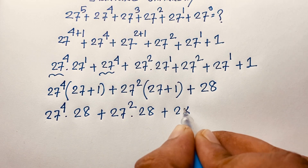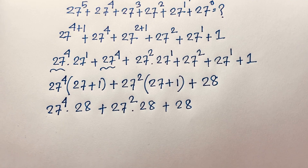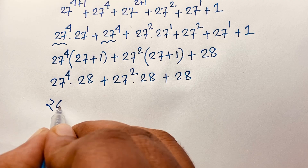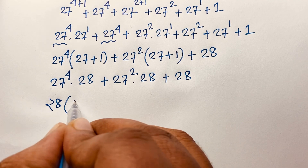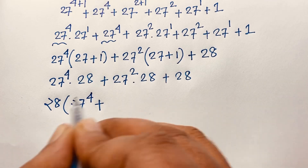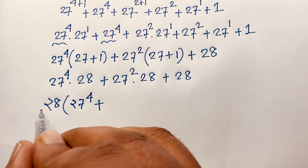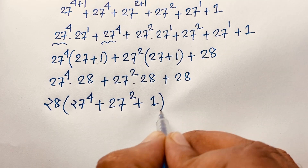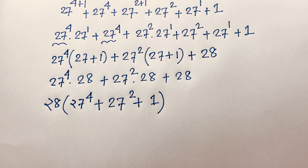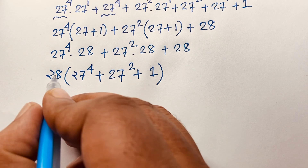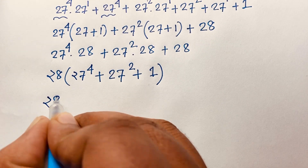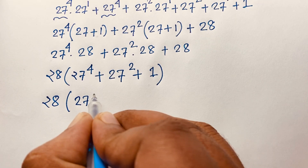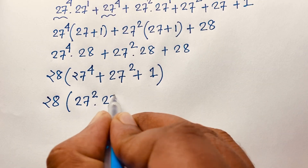Plus 28 here. Now 28 is again common, so we factor out 28: then we get 27 power 4 plus 27 power 2 plus 1. And 27 power 4 can be written as 27 power 2 times 27 power 2, because 2 plus 2 equals 4.